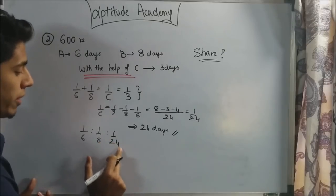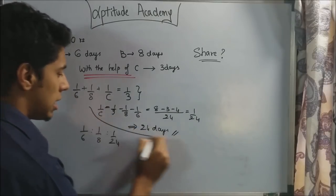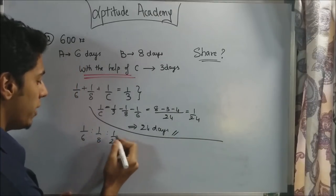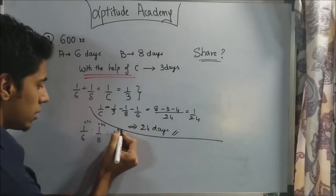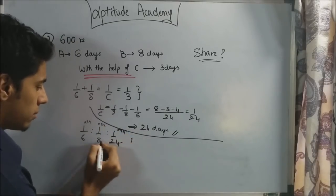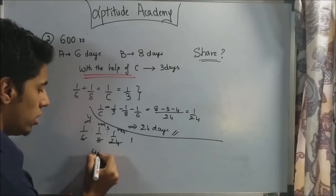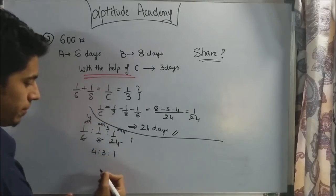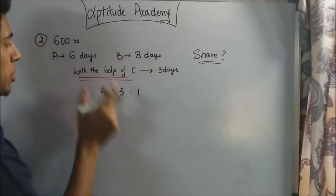To make the whole numbers, find the LCM of the denominators and multiply them. So 6, 8, and 24, the LCM is 24. So multiply it completely. If we multiply 24, this is 1, this is 3, and this is 4. So the ratio is 4 is to 3 is to 1. Now the ratios are 4 is to 3 is to 1. Now the money has to be distributed in this ratio.